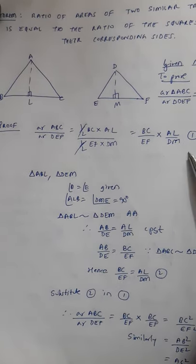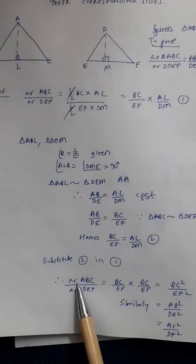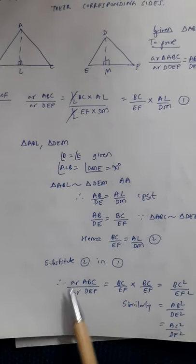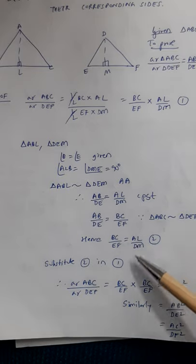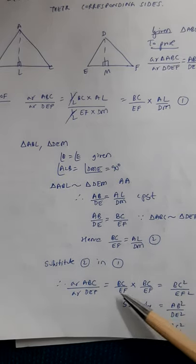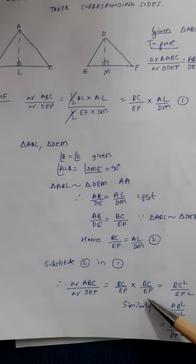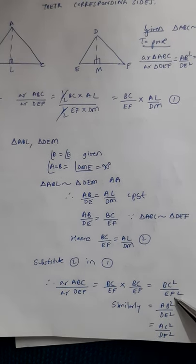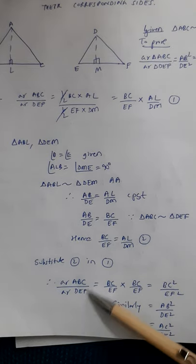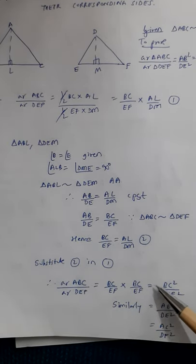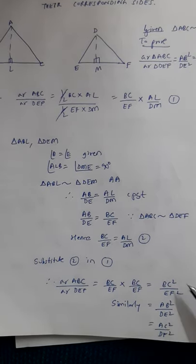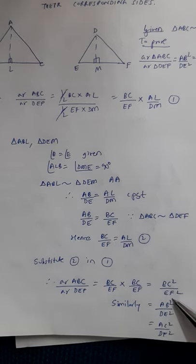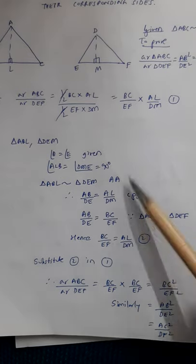Now I am going to substitute this into equation one. Area of ABC by area of DEF equals BC by EF into AL by DM. We have proved that AL by DM is the same as BC by EF. So substituting AL by DM as BC by EF, we get BC square by EF square. Thus, the ratio of areas of two triangles is equal to the ratio of the square of their corresponding sides. If it is proved for one side, it has to be true for the others, so we need not prove this all over again.